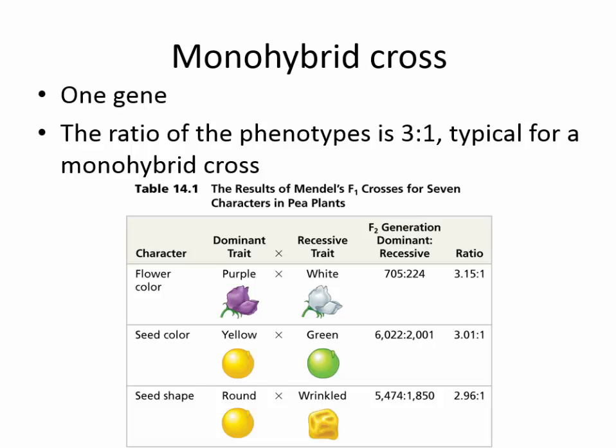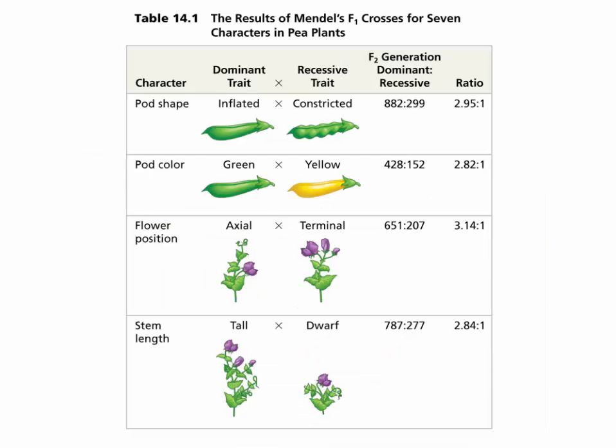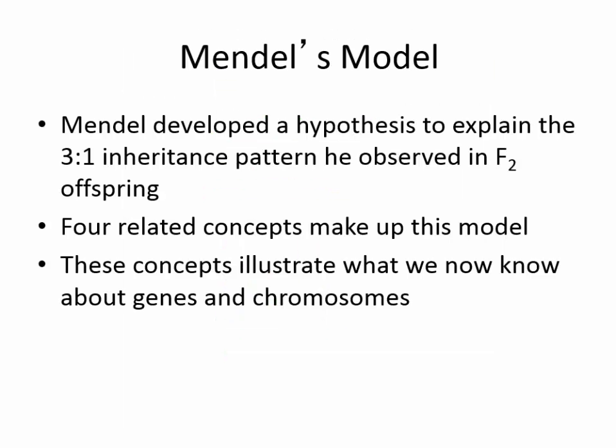That is known as a monohybrid cross, because we're just looking at one gene. But in nature you don't just inherit one gene — you inherit many genes at the same time. However, the ratio for phenotypes is three to one for a phenotypic monohybrid cross, and these were all borne out with his experiments. He developed a hypothesis to explain the three-to-one inheritance pattern, with four related concepts to make up this model.